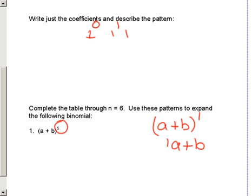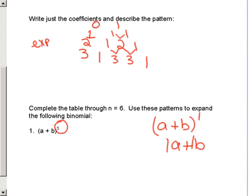So my coefficients are indeed 1 and 1. And then what happens in the next row? It's 1 and 1, but what's the middle term? 1 plus 1. So the next one is 1, 2, 1. Then 1, 3, 3, 1. So this is if my exponent was 2, and this is if my exponent was 3. This is your exponent right here.